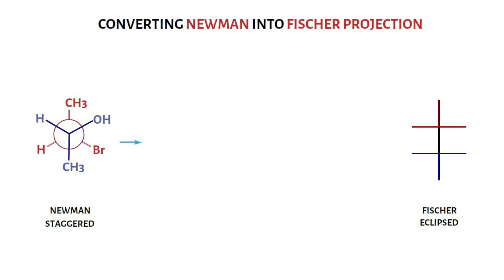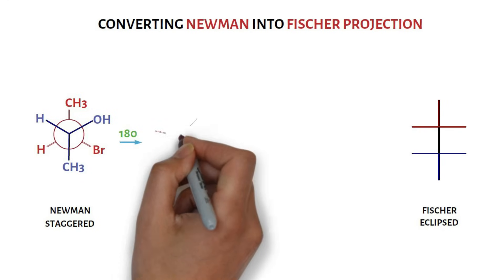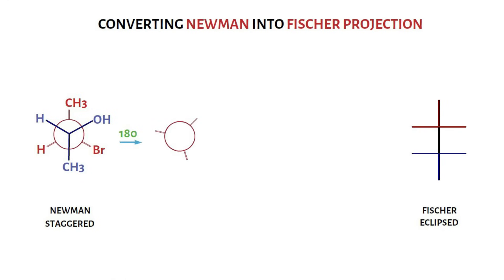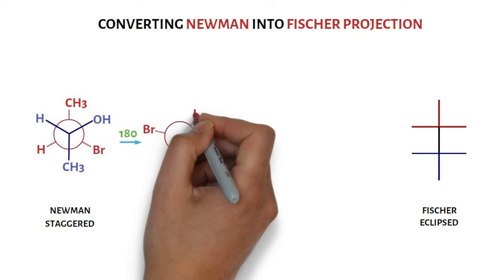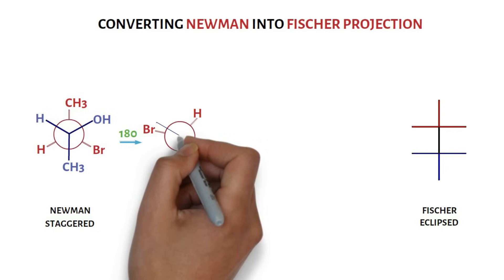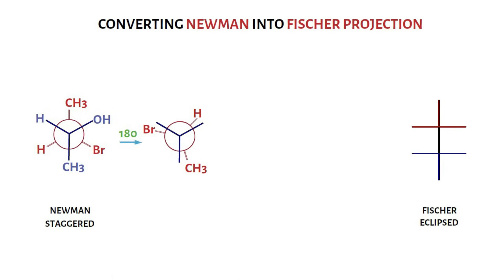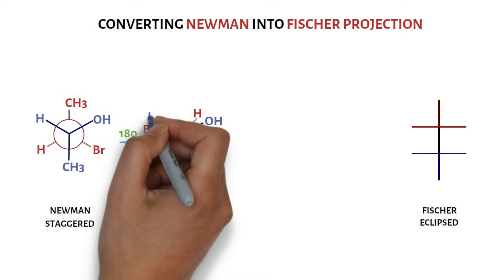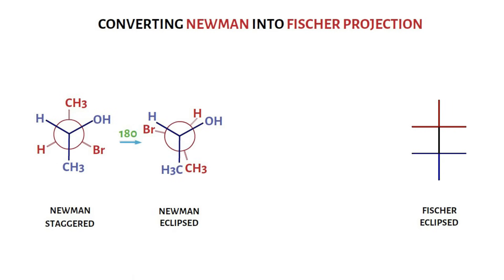If we rotate the back carbon by 180 degrees and keep the front carbon stationary, the red methyl now eclipses with blue methyl, bromine eclipses with hydrogen, and the hydroxyl group eclipses with hydrogen. This makes the Newman projection eclipsed.